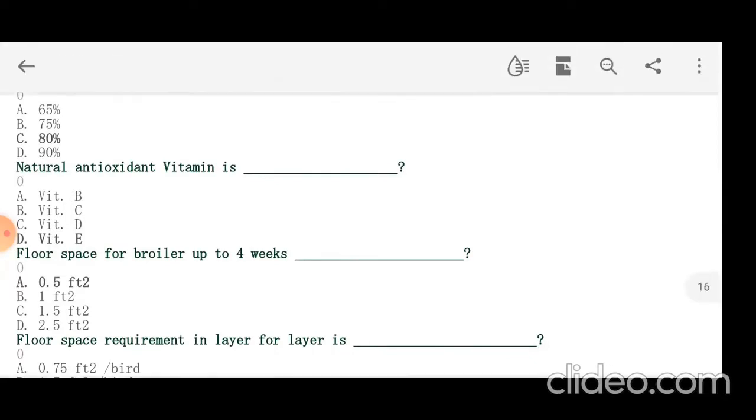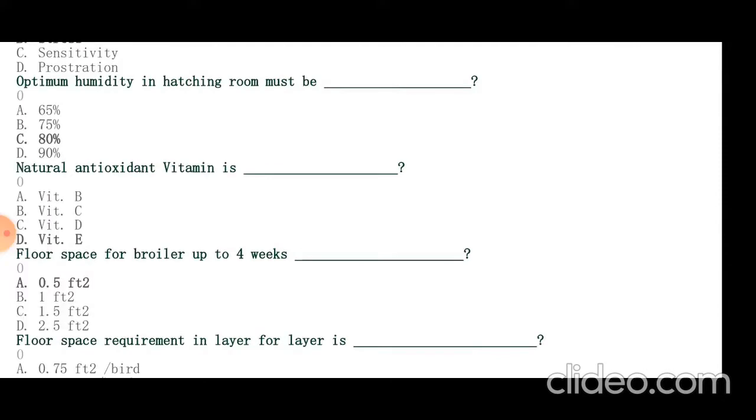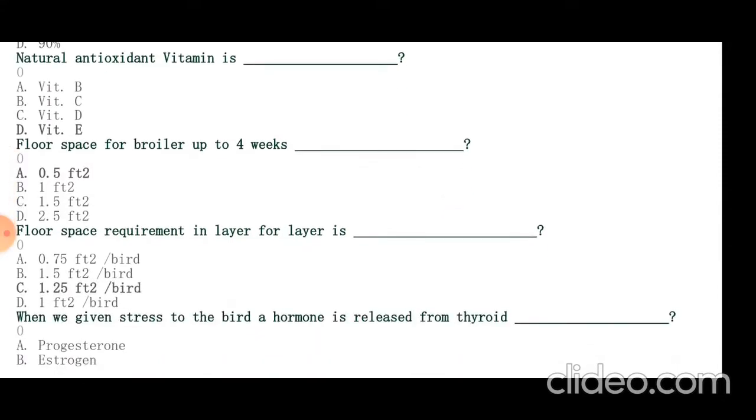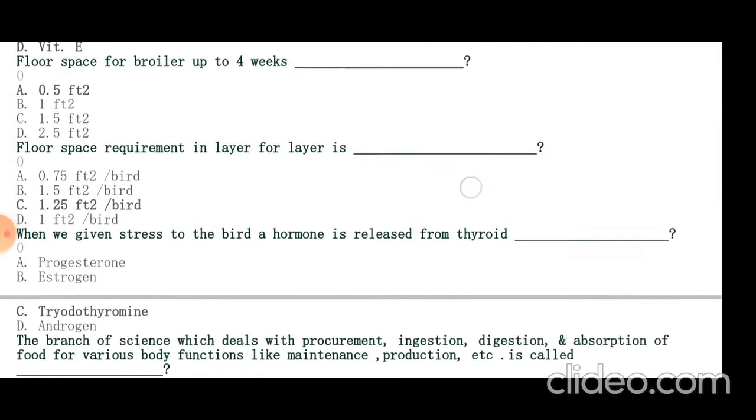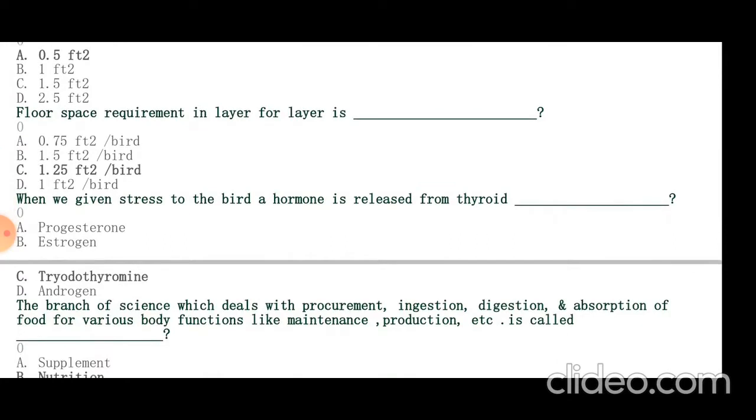Floor space requirement in layer is 1.25 feet square, slightly more than broiler. Broiler has 1 feet square. Broiler chick has 0.5 feet square. When we give stress to the bird, a hormone is released from thyroid: thyroxin. Love hormone is oxytocin.